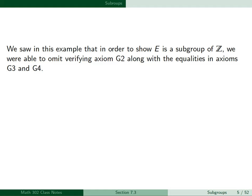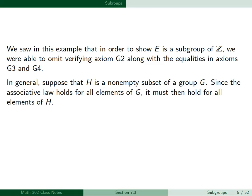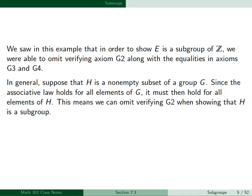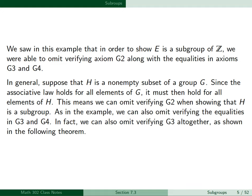Now we saw in this example that in order to show E is a subgroup of Z, we were able to omit verifying axiom G2, the associative law, along with the equalities in axioms G3 and G4. In general, if H is a non-empty subset of a group G, since the associative law holds for all elements of G, it must hold for all elements of H. We can also omit verifying G3 altogether, as shown in the following theorem.